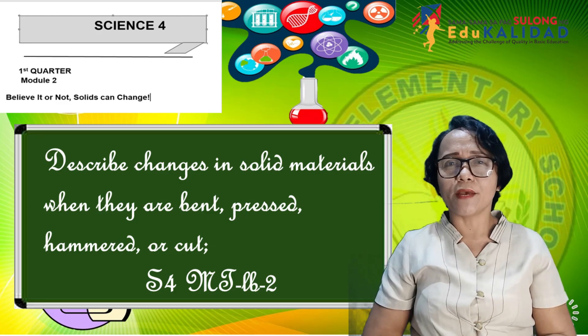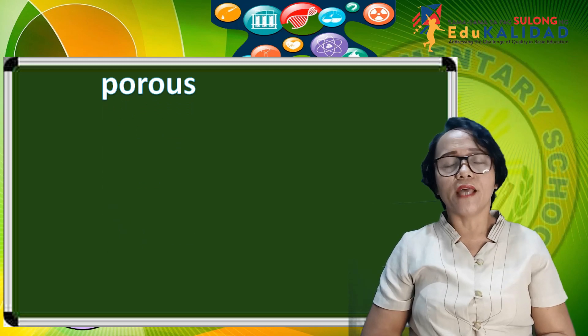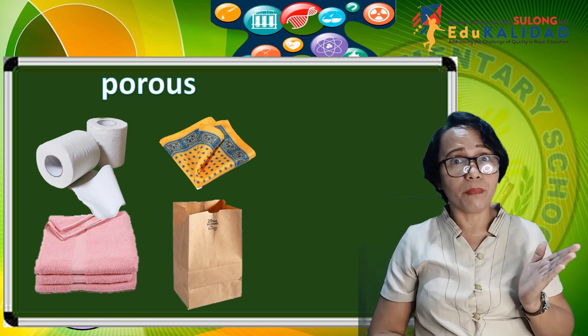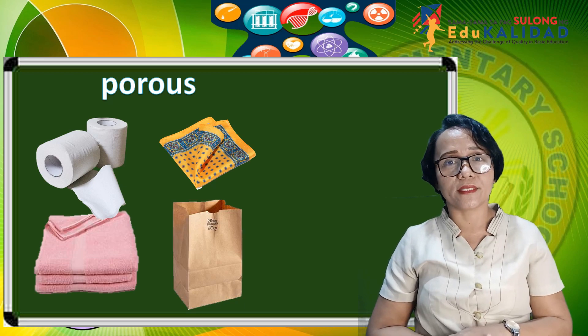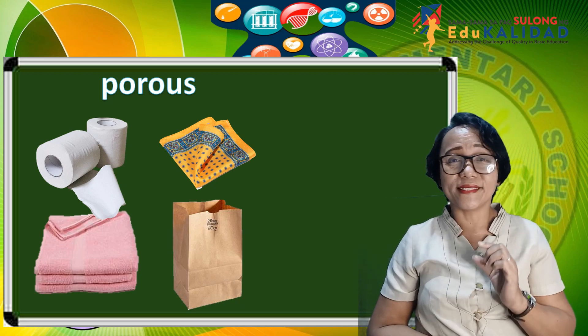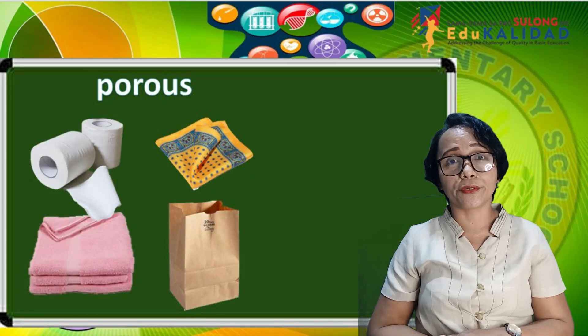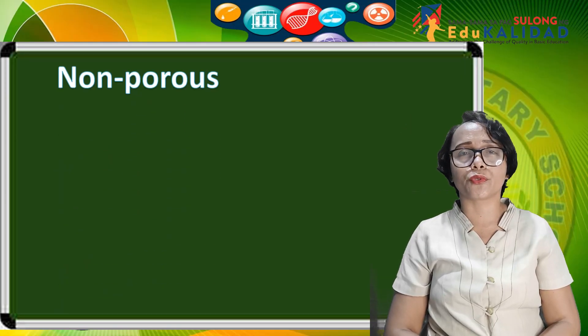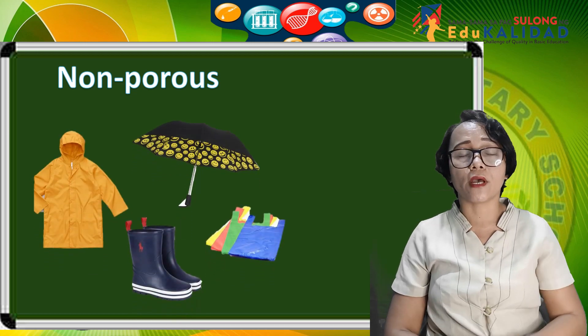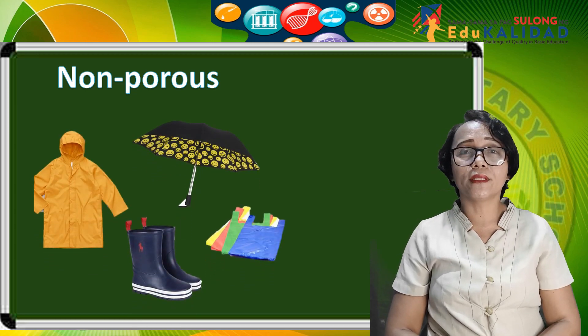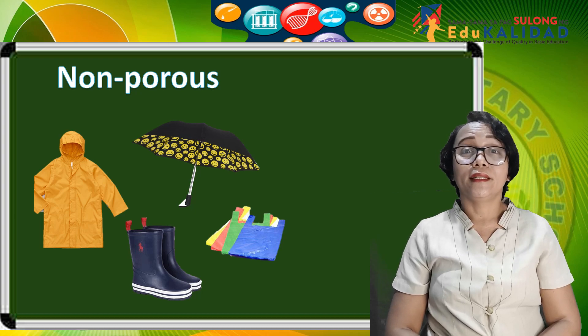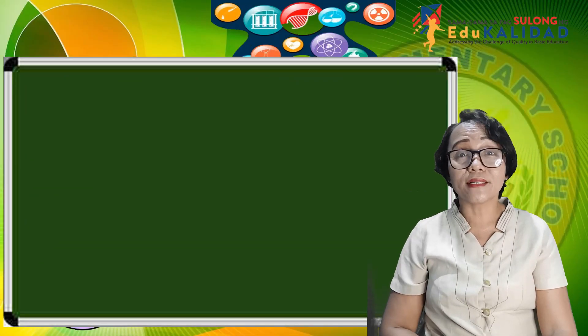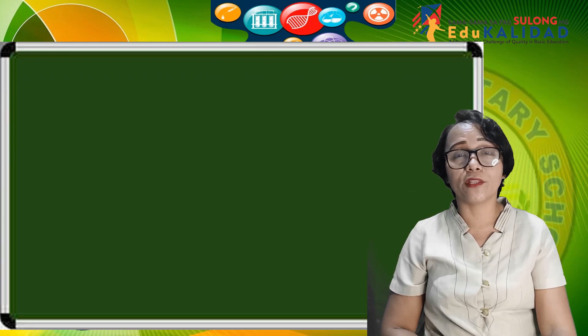In our previous lesson we learned that some materials are porous and others are non-porous. Materials such as tissue paper, handkerchief, towel, and paper bags are examples of porous materials. These materials have small and tiny holes that allow air and water to pass through it. There are also some materials that do not absorb water, such as raincoat, boots, umbrella, and plastic. Those materials are non-porous. They do not have small tiny holes that allow water and air to pass through. These materials are waterproof; they do not have holes to let the water in.